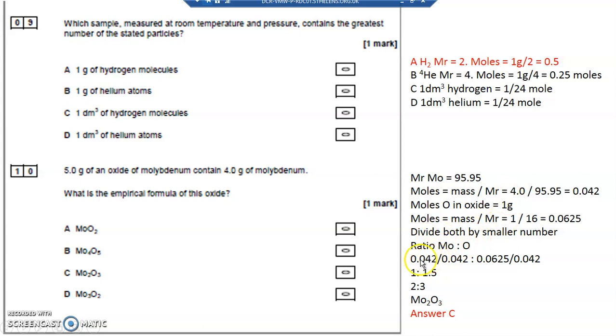Divide by the small number 0.042 divided by 0.042, I've got 1 molybdenum to a ratio of 0.0625 divided by 0.042 to 1.5 oxygen, which is 2 to 3. Mo₂O₃. Answer C.